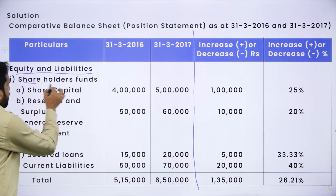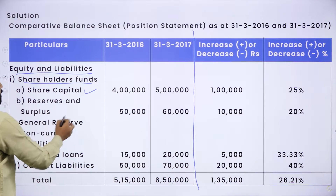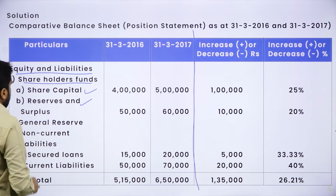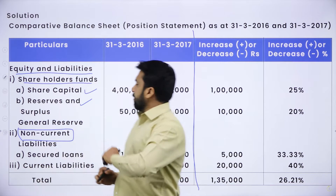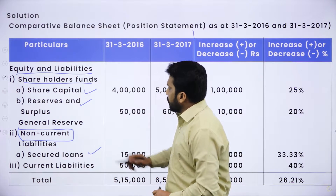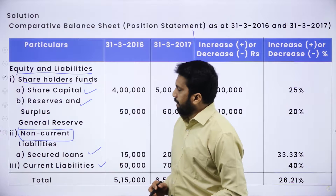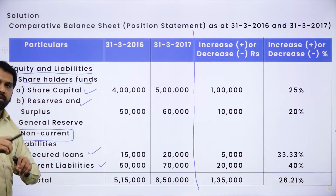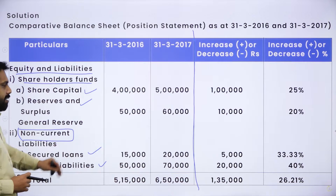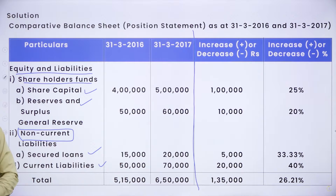Under shareholders fund, we have two items: share capital and reserve and surplus. The second classification is non-current liability, under which we have secured loan. The last classification is current liability. Your presentation must be classified this way. Without classification you can write the problem, but your marks will be less. Better to classify as shareholders fund, non-current liability, and current liability.